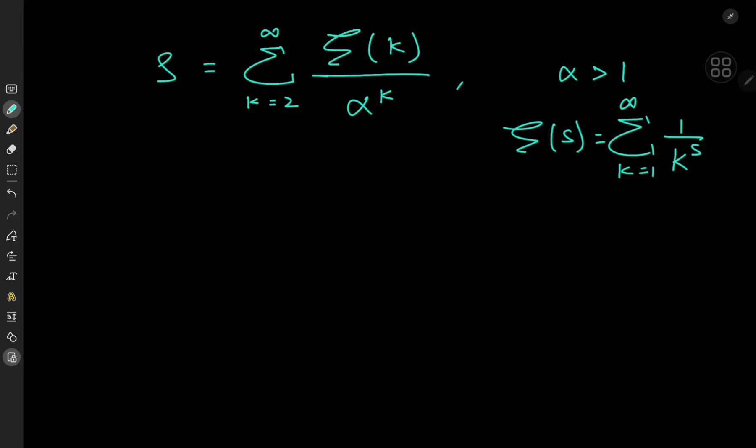Hello once again, this is your host Kamal, and today we have an interesting infinite series at hand. We're defining the sum S as the sum over the integers k from 2 to infinity of zeta(k) divided by alpha to the k. So we're evaluating the sum in terms of a parameter alpha, where alpha is supposed to be greater than 1, and this is the Riemann zeta function for the real part of s being greater than 1.